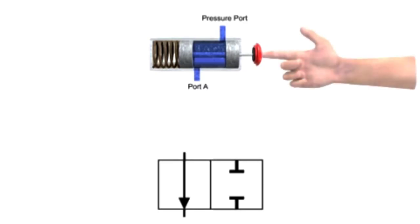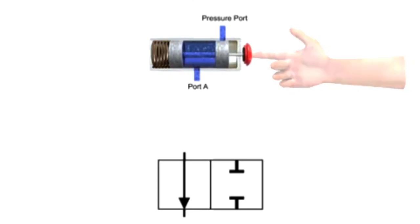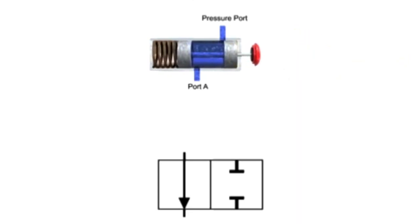Additionally, this valve is a spring return valve, meaning that after it is actuated, a spring returns the spool to the normal position. A spring symbol is placed next to the block representing the normal position. Actuators used to change valve positions can be mechanical, pneumatic pilot, or electric solenoid. To complete the diagram, the primary actuator symbol is placed on the other end of the graphic symbol. In this case, the actuator is a push button.